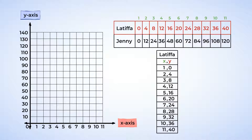Now it's time to plot them. The first coordinate puts us at 1 on the x axis, but there's a 0 for the y value, so we don't move up any spaces. For the second coordinate, we follow the x axis to 2 and then move up 4 units. For the third coordinate, we trace the x axis to 3 and then move up 8. Let's keep filling in the rest of Latifah's points. Here they are.